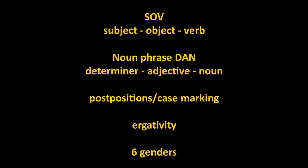Grammatically speaking, Chechen is an SOV language — subject-object-verb — meaning the verb comes typically at the end of a sentence. The noun phrase is: determiner (a demonstrative pronoun, because Chechen has no articles — words like 'this' or 'that'), then the adjective, then the noun. So it's a head-final noun phrase, similar to English in that the adjective comes before the noun.